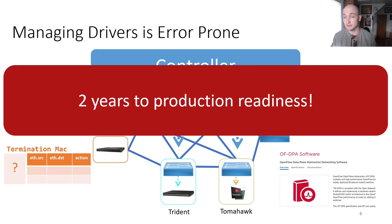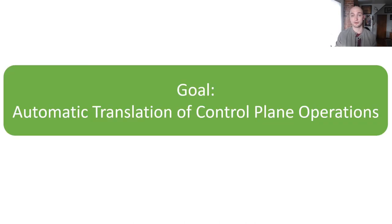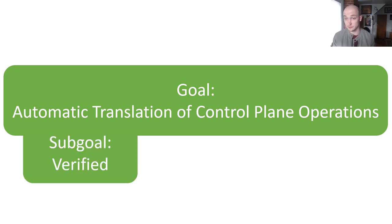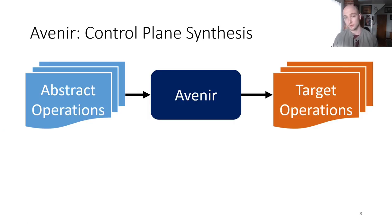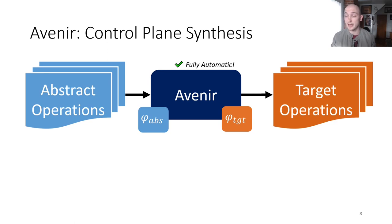These considerations hinder the flexibility of data planes that real controllers can support. So, to recover the easy support for data plane heterogeneity that we have in traditional networking, we want to develop an engine that supports the automatic translation of control plane operations to reduce the redundant, error-prone, and burdensome code that engineers are required to write. As secondary goals, we want our engine to be verified to eliminate subtle bugs, and we want our engine to be efficient to avoid prohibitive runtime overheads. To this end, we have developed Avenir, which leverages program synthesis to translate abstract operations on abstract pipelines into equivalent operations on target pipelines, in a fully automatic way. Simply pass formal descriptions of the abstract and target programs, and Avenir automates the rest.